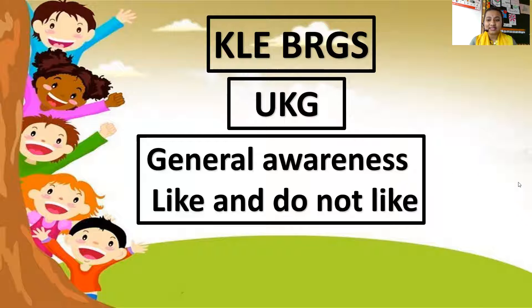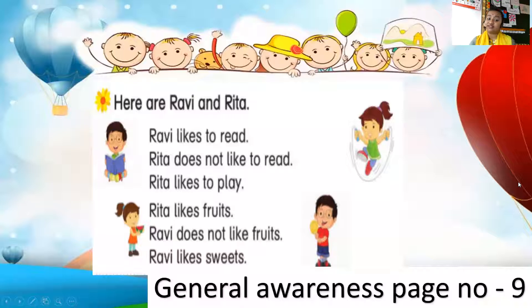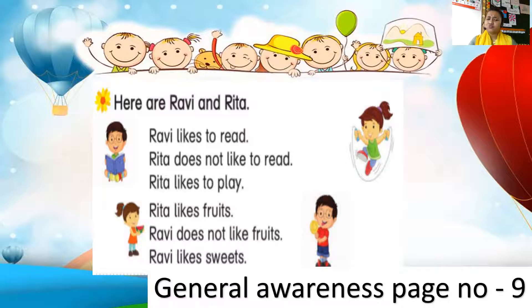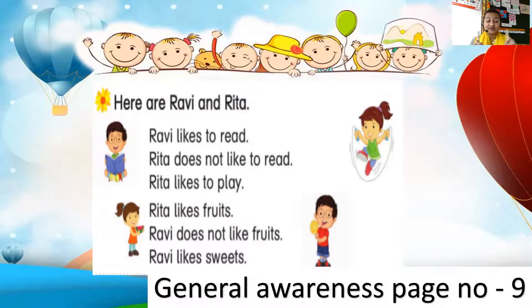So let's see — there is a small story on Ravi and Rita. Ravi likes to read books. But Rita does not like to read books. Rita likes to play. She does not like to read books but she likes playing.